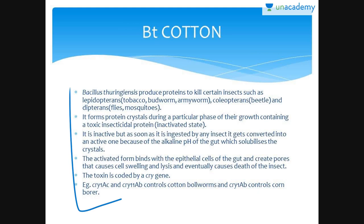These proteins are present in an inactive protoxin form but become active toxin in the alkaline pH of the insect gut. The activated toxin binds to the surface of midgut epithelial cells and creates pores that cause cell swelling and lysis, eventually causing death of the insect. Specific BT toxin genes were isolated from Bacillus thuringiensis and genetically transferred to several plants such as cotton.